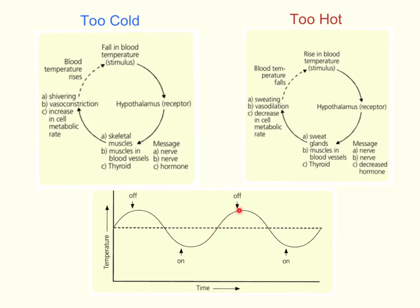This is what the process looks like — even though I used this example for an oven before, this exact same process occurs in our bodies. This dotted line would be our set point temperature of 37 degrees Celsius. We're constantly heating up until we're too hot, then cooling down until we're too cold, heating up again, just fluctuating about our set temperature of 37 degrees Celsius.